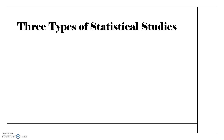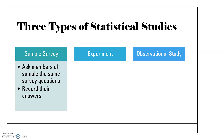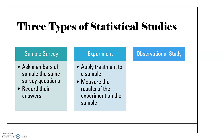To start, we're going to look at the types of statistical studies. There are three types: a sample survey, an experiment, and an observational study. A sample survey is when you ask members of the sample the same survey questions and keep track of their answers. An experiment is when you apply a treatment to a sample and then measure the results.